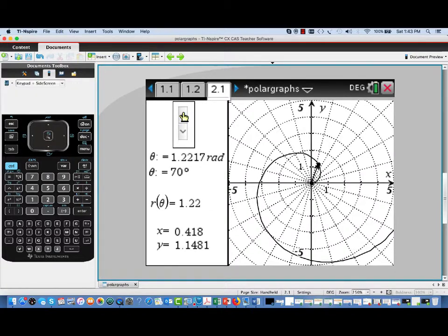In this case, R of theta is just theta, so the R value matches the theta value as we trace around. You can also see the x and y coordinates of the point.